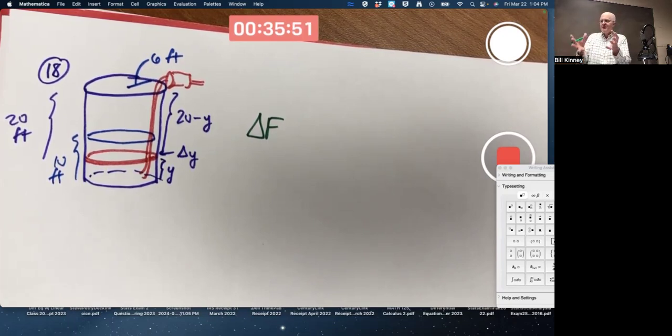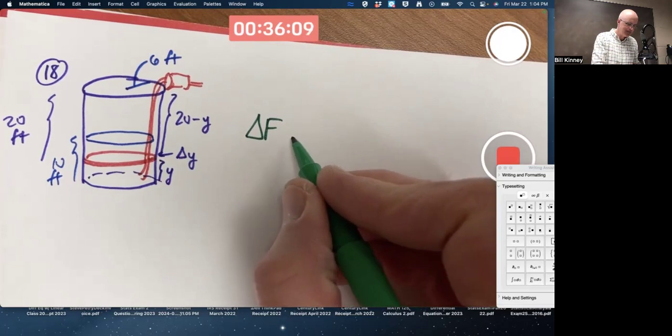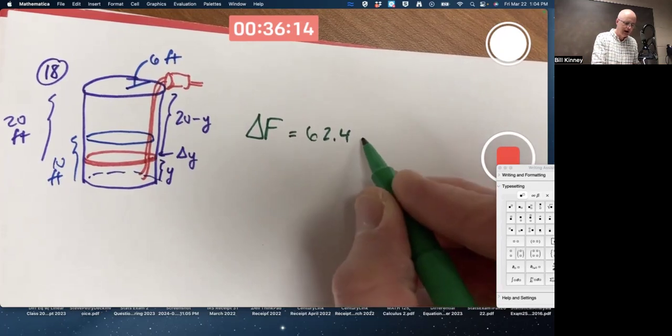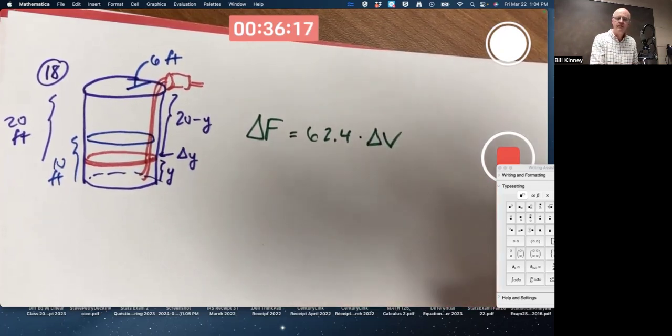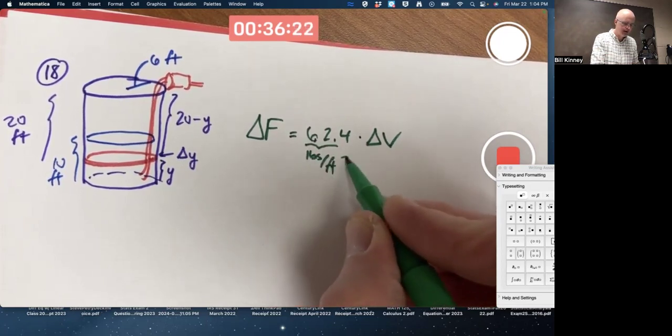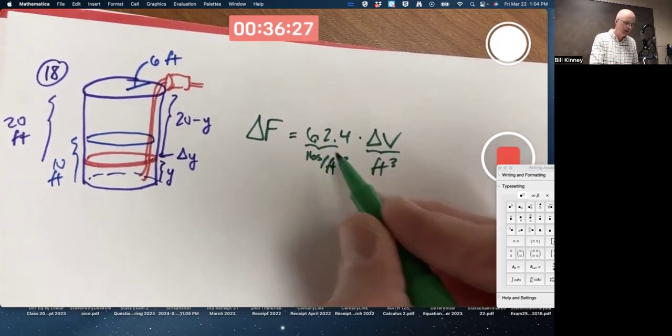It's 62.4 pounds per cubic foot. Cubic foot's about this big. Imagine filling that with water and lifting it up. It's bigger than a gallon of milk. It's going to weigh 62.4 pounds. I don't know. Maybe it's a little hard to believe, but that's what we're told. So, it's 62.4 times the volume. But what's the volume?